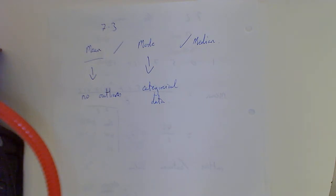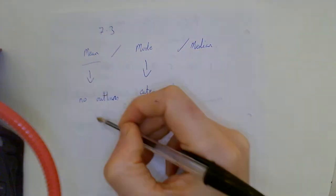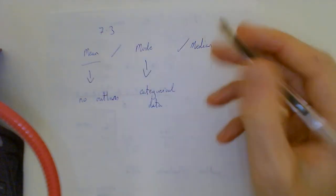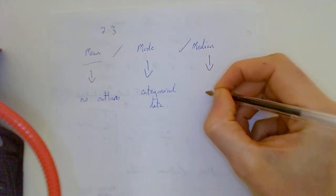That's the best one to use now. The question can say find the mode, it's not gonna be the best one. But when the question says what is the best measure of average, you would use it. Then you would say because it's categorical data I will use the mode. Because there's no outliers I will use the mean. If there is an outlier, we will use the median.